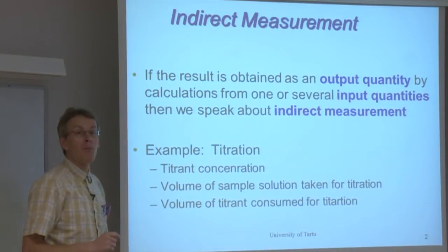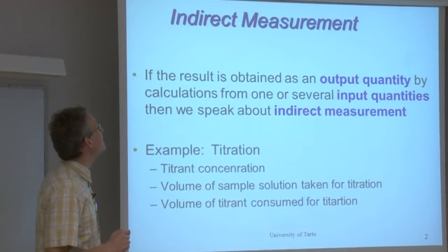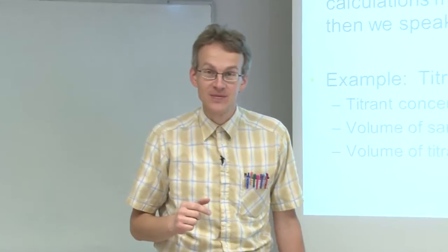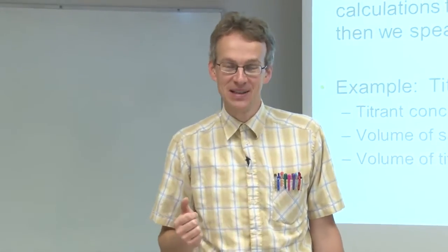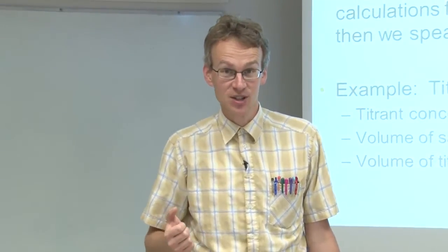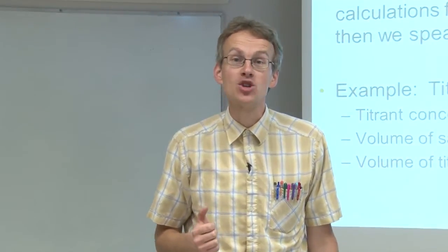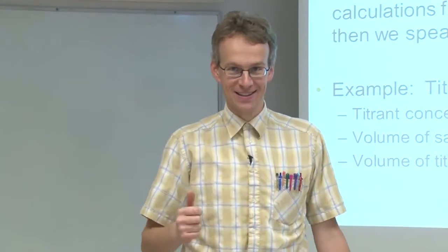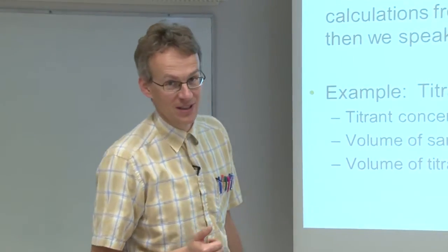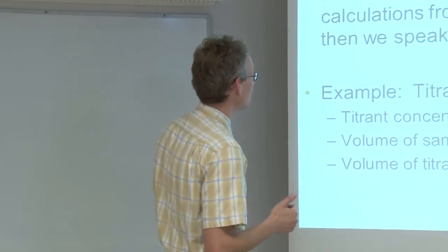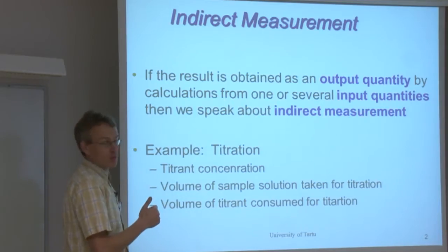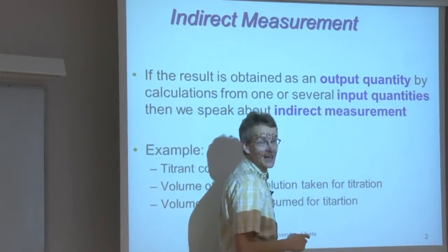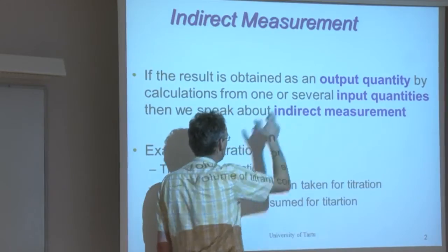And most of the measurements in chemistry are indirect measurements, meaning that we do not see from our measurement instrument display immediately the result, but rather we measure different quantities, different parameters, and calculate from their values our measurement result value. And all such measurements where from values of input quantities the output quantities are calculated, are called indirect measurements.